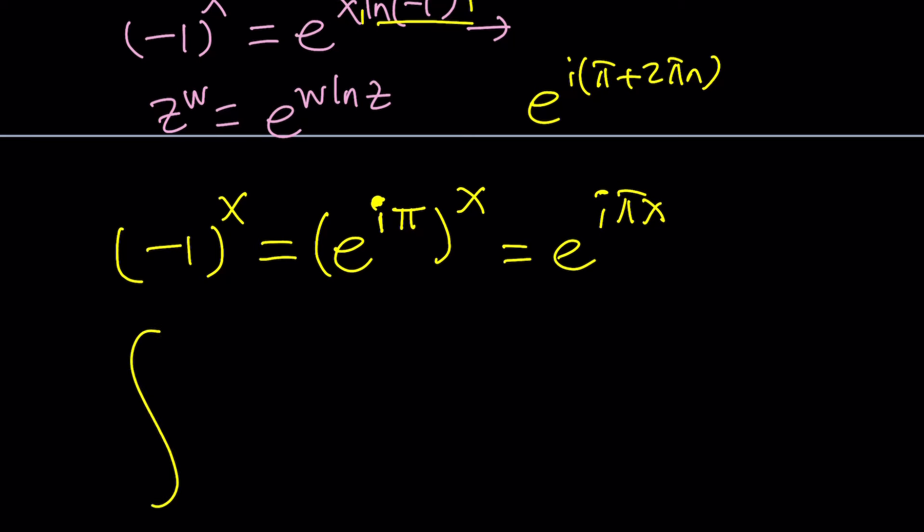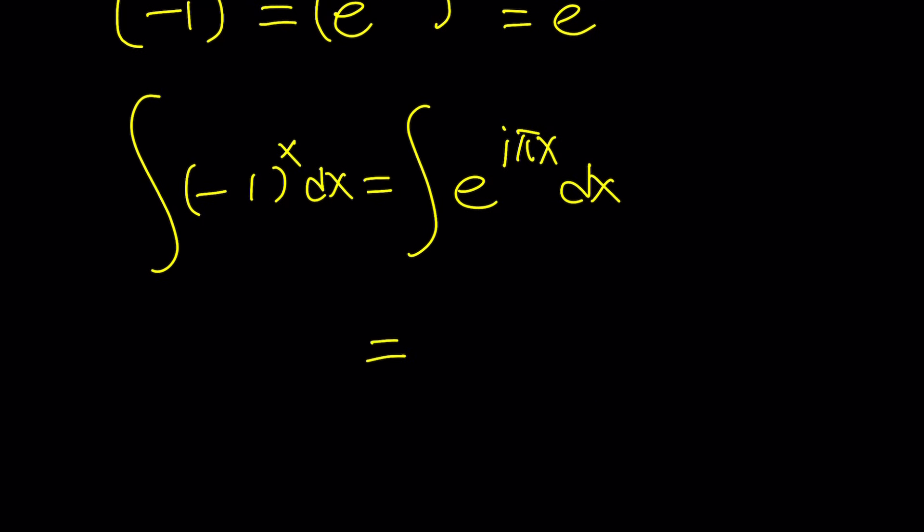Now, we can go ahead and integrate negative 1 to the power of x easily because now we have it in exponential form, which is e to the i pi x dx. And according to the formula, or if you think about it, what is e to the power of some constant x? e to the kx dx. Remember, that would be e to the power of kx divided by k plus c. So, you would do e to the power of i pi x divided by i pi plus c.